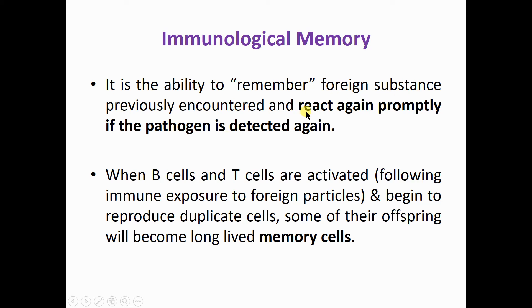When that child's body is again exposed to the same type of foreign pathogen for the second time, these memory cells already remember being exposed to this type of pathogen. So at the second time, they will react promptly when the pathogen is detected again. This is known as immunological memory — it is governed by the memory B cell and memory T cell.